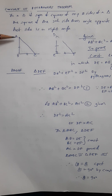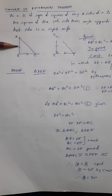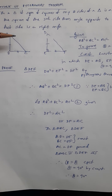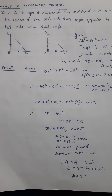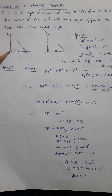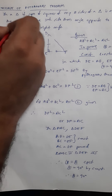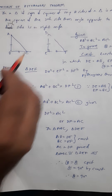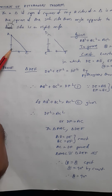In triangle ABC, what is given to us is that AB² + BC² = AC². What we need to prove is that angle B is 90 degrees.